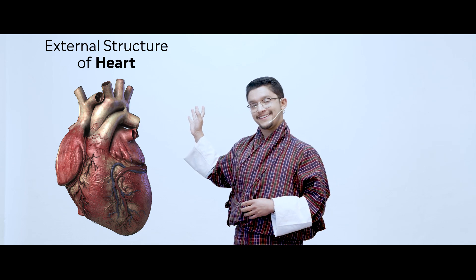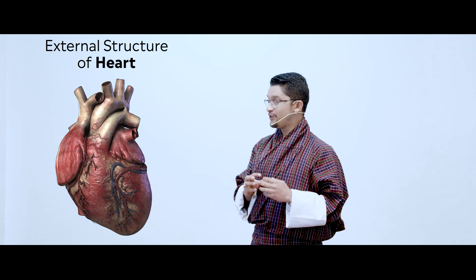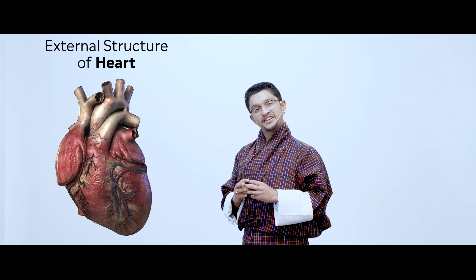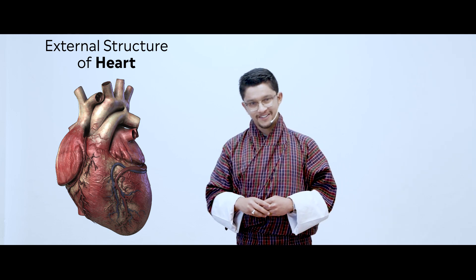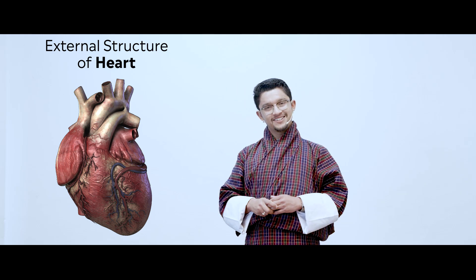Now let us move towards the structure of the heart. Let us look at the external structure of the heart. I hope you can identify a few parts as we already studied about the heart in our lower classes. We can see the chambers and some blood vessels. Generally, as we look at the external part of the heart, we see three different components: depressions or grooves, the chambers, and some blood vessels.